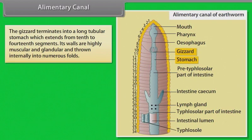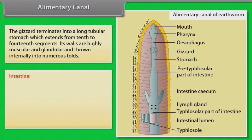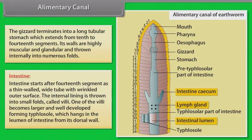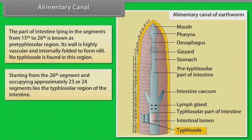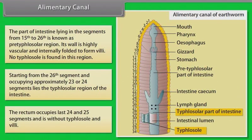The intestine starts after the fourteenth segment as a thin-walled, wide tube with a wrinkled outer surface. The internal lining is thrown into small folds called villi. One of the villi becomes larger, forming the typhlosole, which hangs in the lumen of the intestine from its dorsal wall. The pre-typhlosolar region spans segments 15 to 26, and is highly vascular with villi but no typhlosole. The typhlosolar region occupies approximately 23 to 24 segments from the 26th. The rectum occupies the last 24 to 25 segments and is without typhlosole and villi.